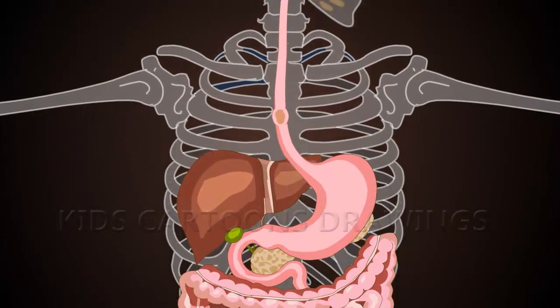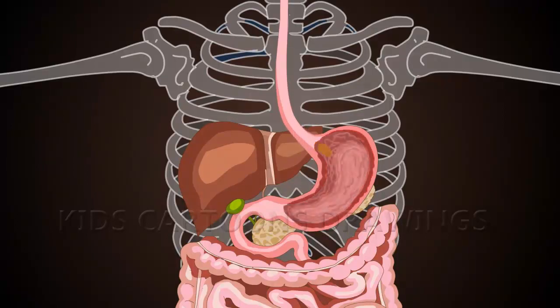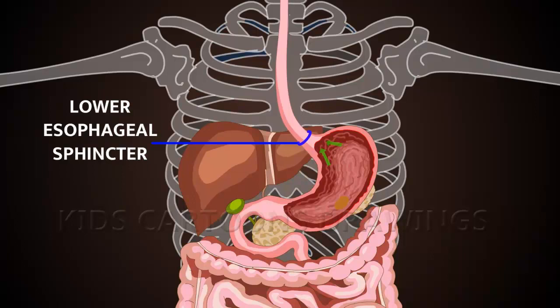The bolus passes into the stomach through the lower esophageal sphincter. The lower esophageal sphincter closes, preventing reflux.